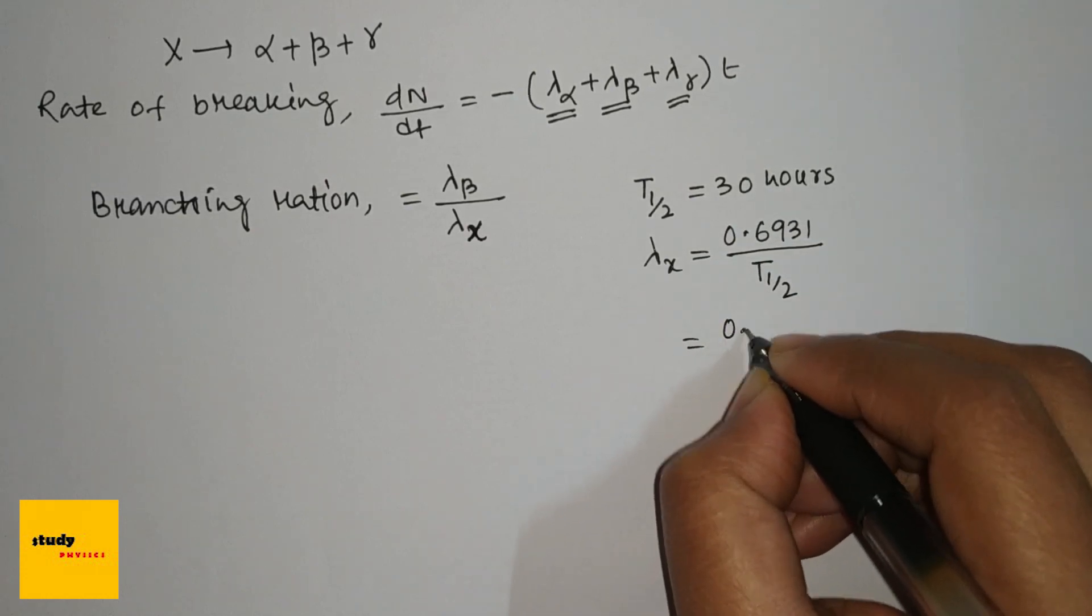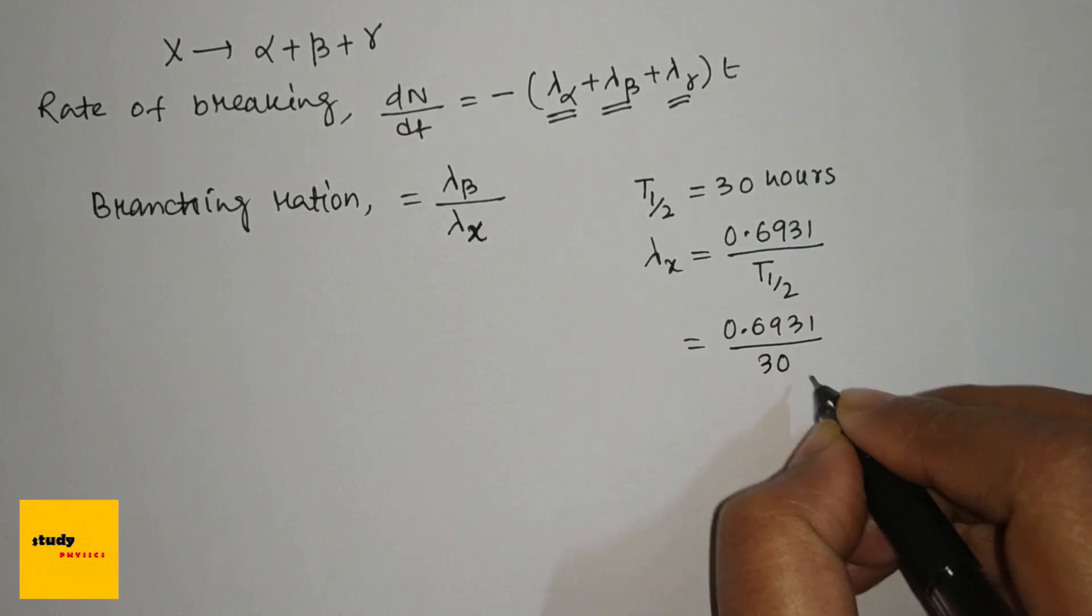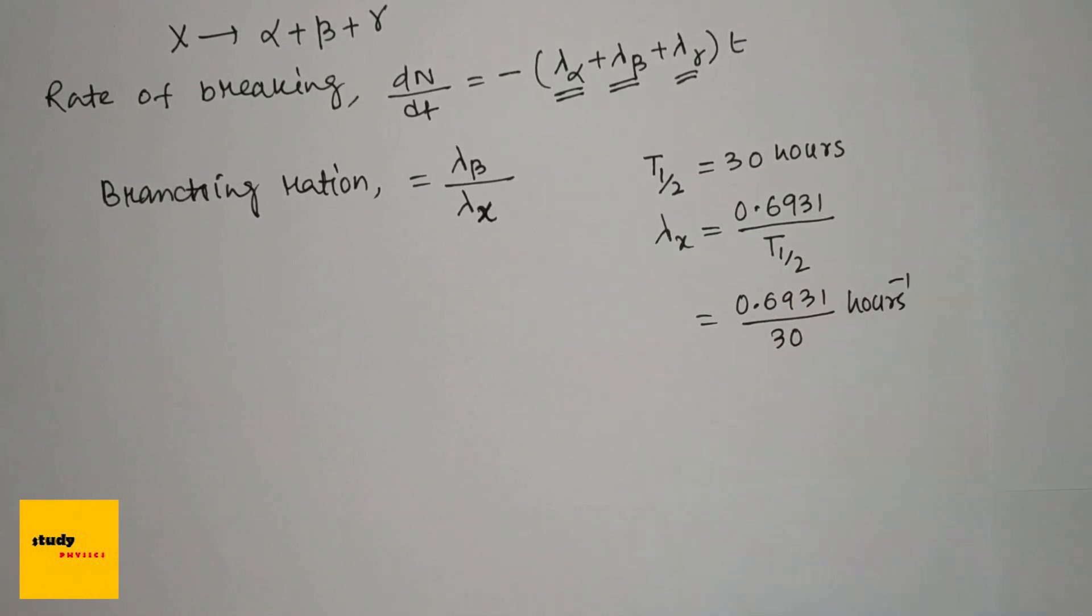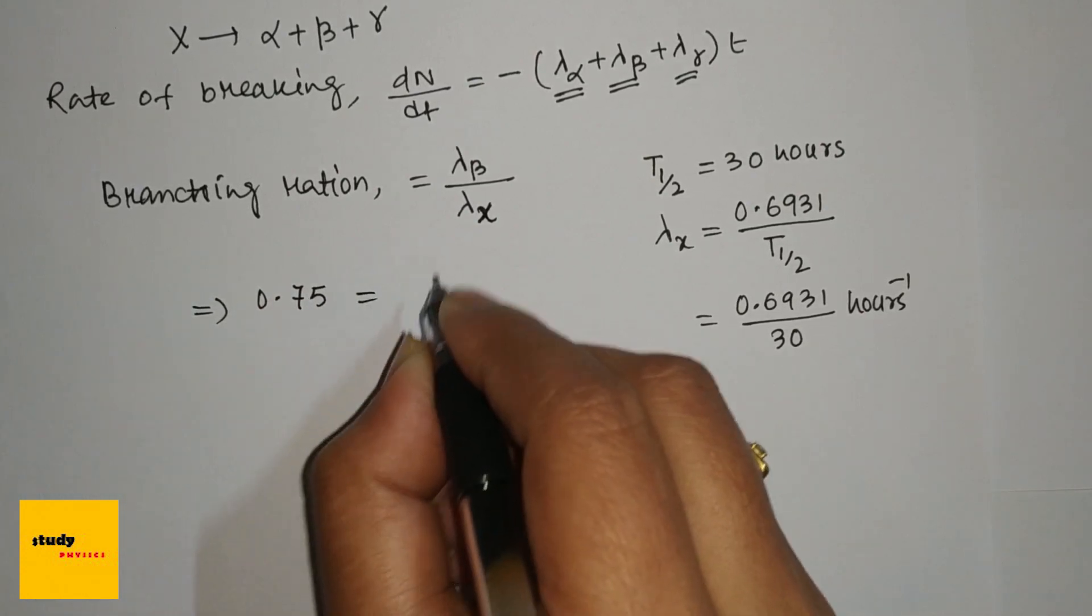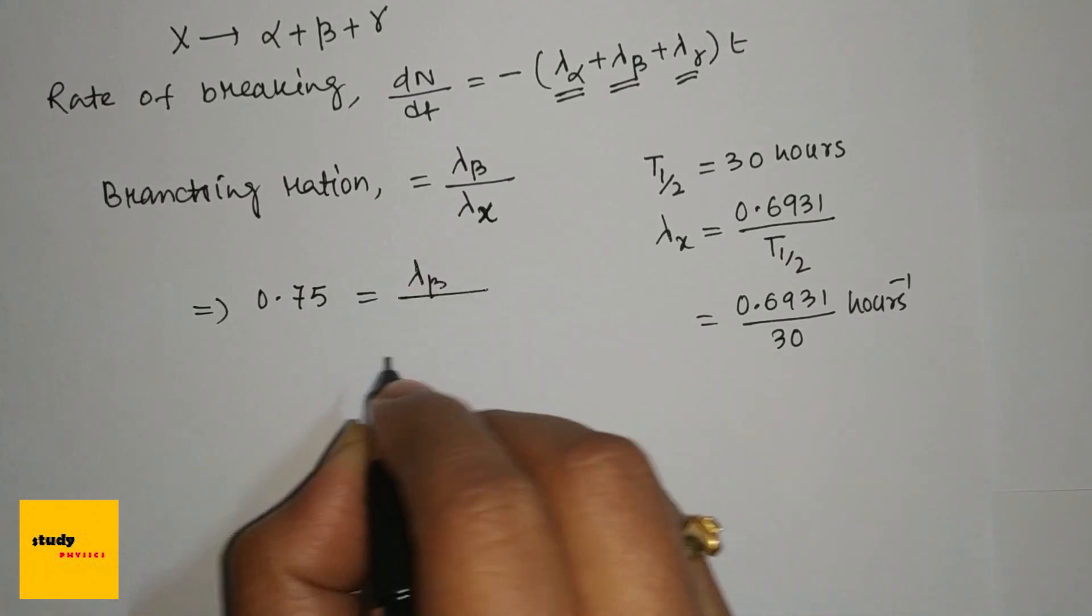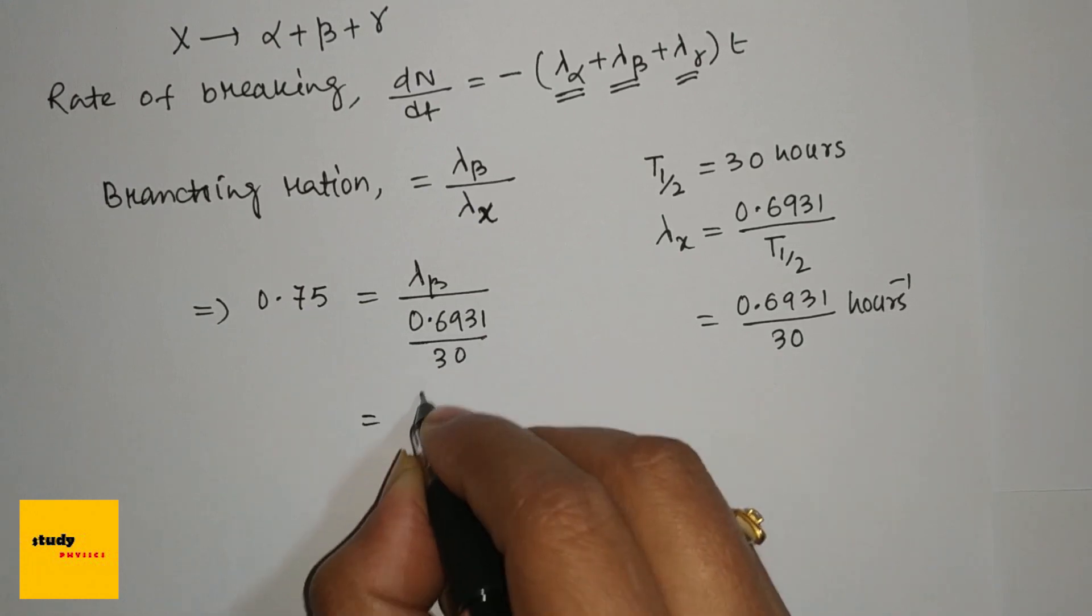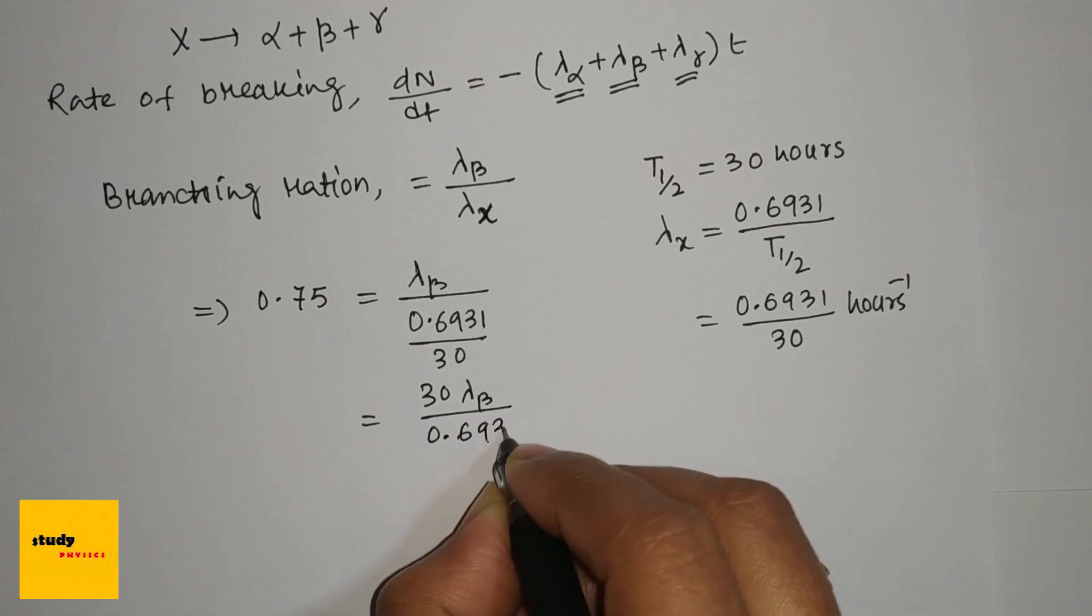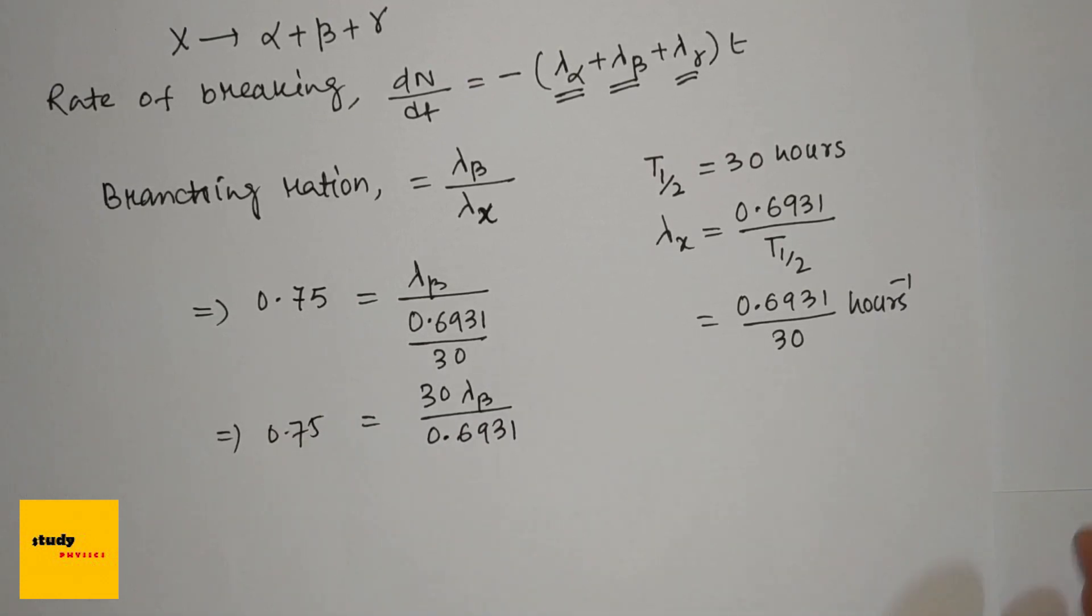The branching ratio is 0.75. So we have 0.75 equals lambda beta divided by 0.6931 divided by 30, which equals 30 lambda beta divided by 0.6931.